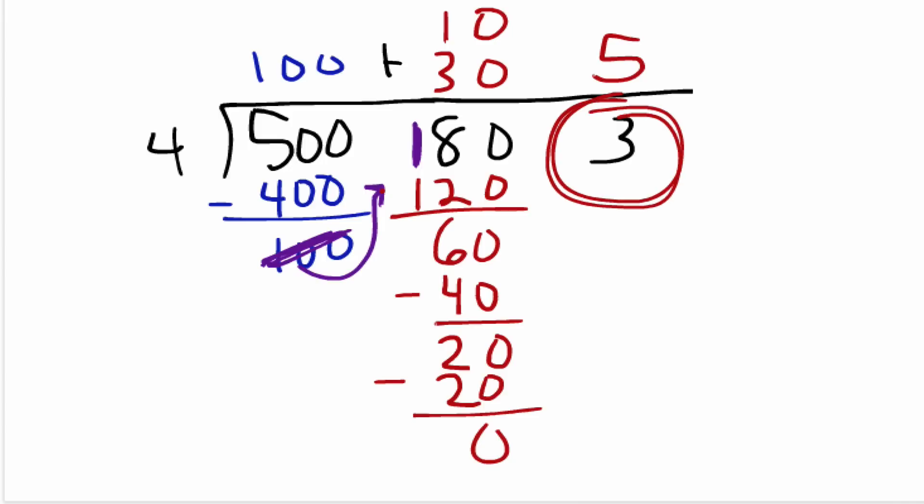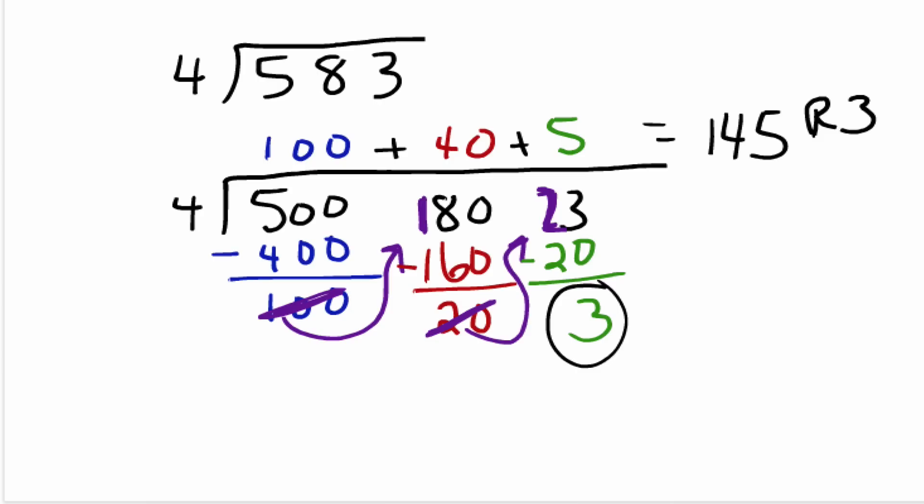So now what we can do is add all of our partial products together. So we have 100 plus 10 plus 30 plus 5, and that equals 145. And there is our remainder of 3. So that's a second way that we could have divided using the expanded notation.